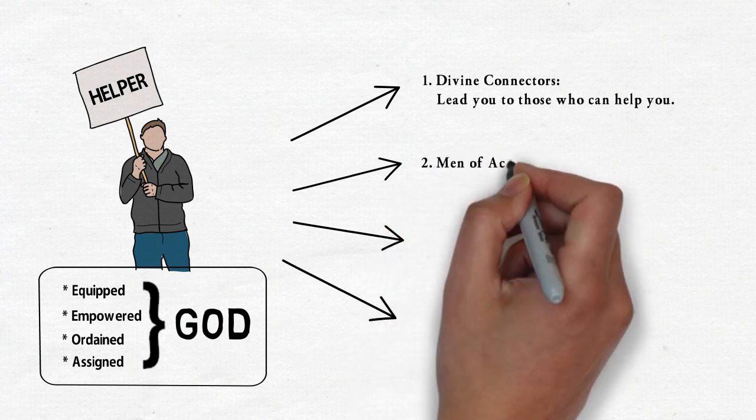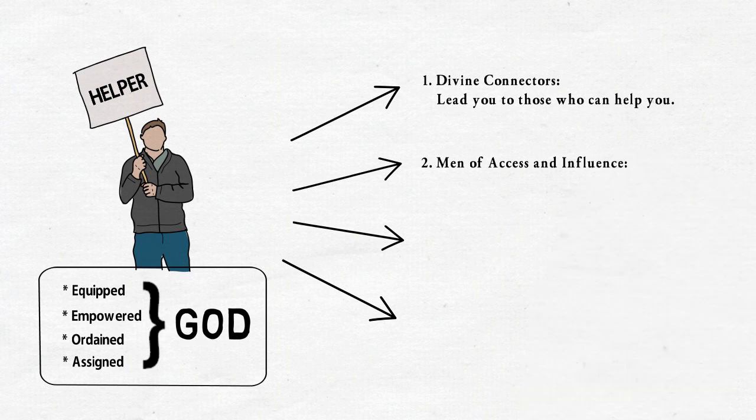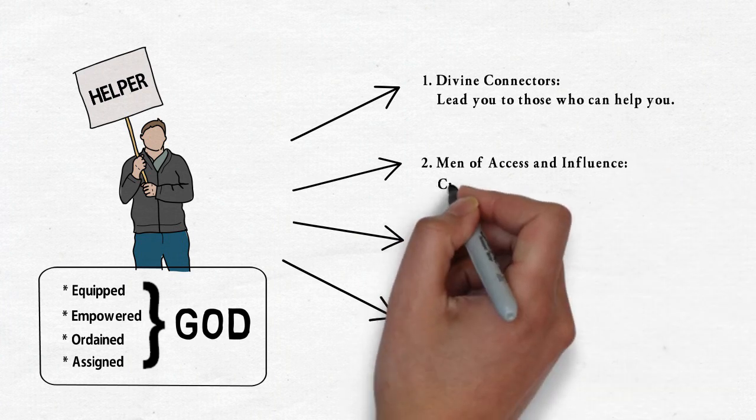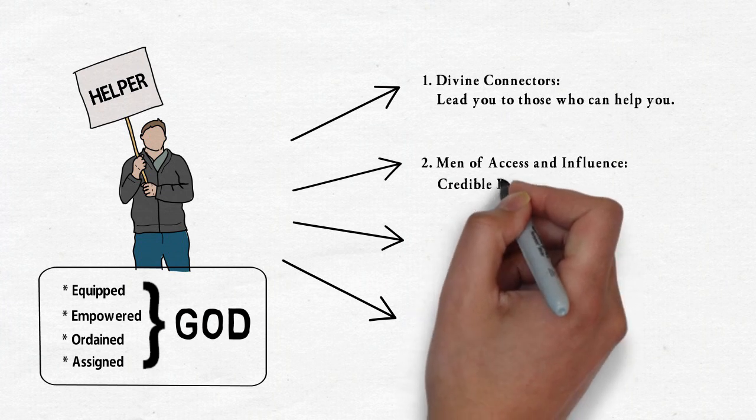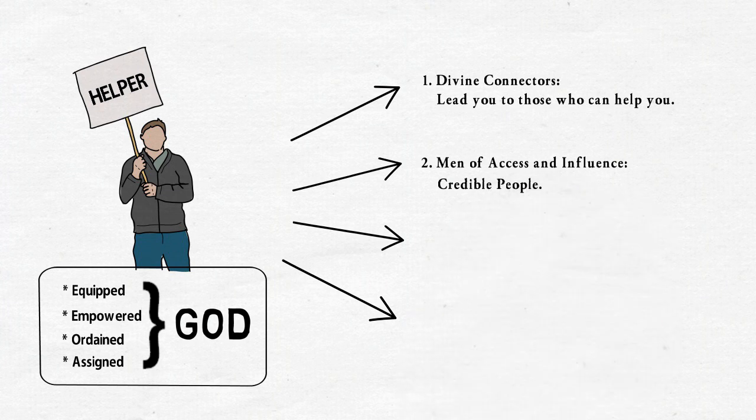The second kind or type of destiny helpers that we need are called men of access and influence. Difficult things become very easy when credible people speak for you. Everybody respects somebody.